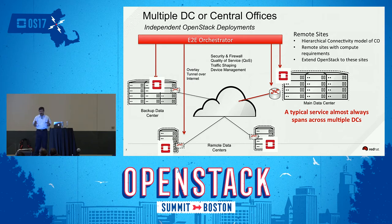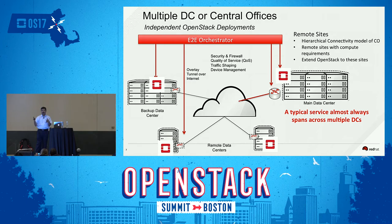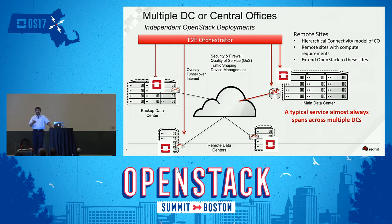In the big picture, you have all these remote sites and multiple data centers, each running an OpenStack instance — you may have a hierarchical connectivity model, but each one is an independent island. Each one manages its own local set of resources. This is how every telco deploys OpenStack today — each instance is independent, and HA or service functionality is not at the infrastructure layer but at the VNF or network applications layer.